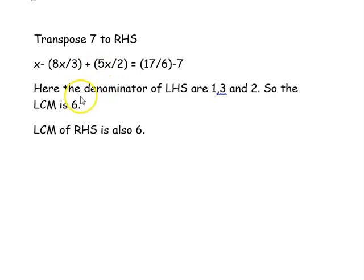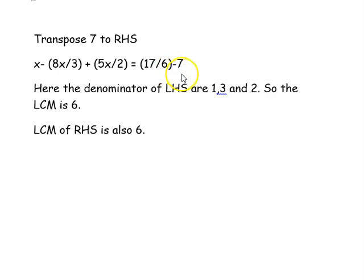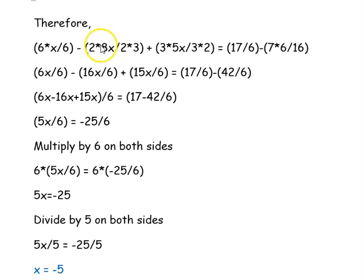The LCM of 1, 3, and 2 is 6. Looking at the right hand side, we also have 6 and 7 over 1, so the LCM there is also 6. Therefore, we are rearranging the equation to get the denominator 6 on both sides.